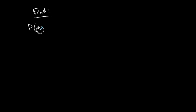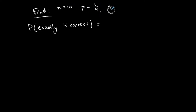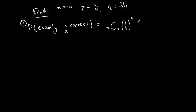Now that we've confirmed it's binomial, let's find the probability of getting exactly four correct answers. Here, n equals 10, p equals one-fourth, q equals three-fourths, and x equals 4 because success is a correct answer. Using the formula: nCx times p to the x times q to the n minus x — that's 10C4 times (1/4)^4 times (3/4)^6.